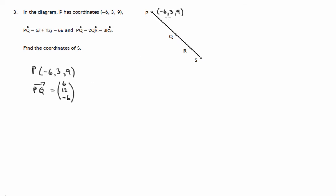So this here, (6, 12, -6), traveling from P to Q. So that would imply that the point Q, if we've traveled 6 units parallel to the x-axis, we've added 6 to -6 to get 0. If we were at 3 on the y-axis and we've traveled a further 12 units along the y-axis, we've reached 15.